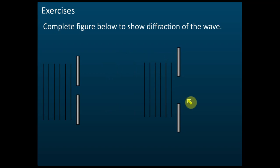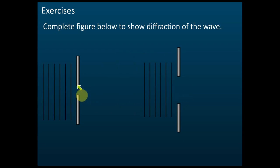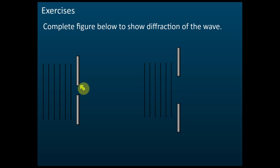Let's see two more examples. Your teacher may give you one with a small opening and one with a big opening. First, check the size of the opening. For this one, the size is more or less the same as the wavelength. When the size is about the same, the wavefronts will be a curve.